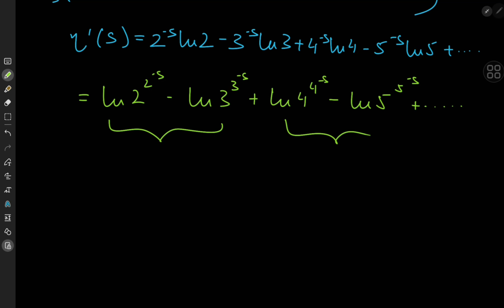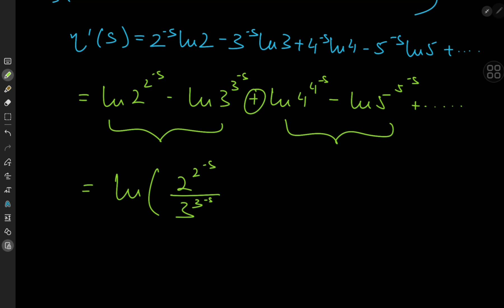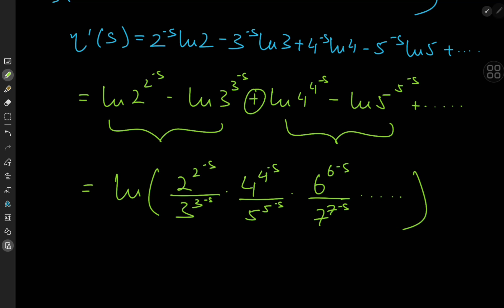We have differences of logarithms that combine into a single logarithm whose argument is a fraction of the two arguments, and logarithms being added together means we can multiply arguments. So η'(s) equals log of [2^(2^(−s)) / 3^(3^(−s))] times [4^(4^(−s)) / 5^(5^(−s))] times [6^(6^(−s)) / 7^(7^(−s))], and so on.